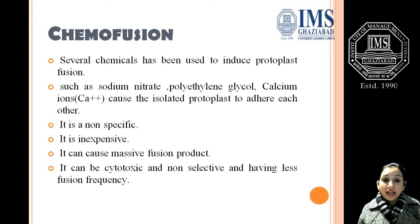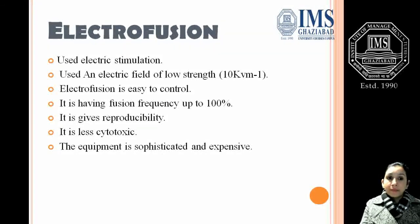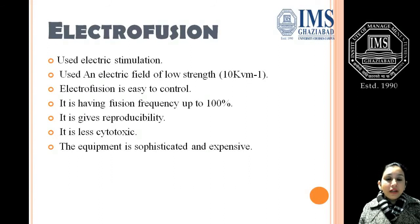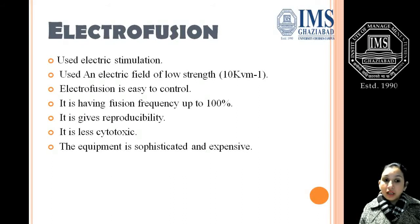In electro fusion, an electric field is used to fuse the protoplasts. A field of slow strength at 10 kilovolts is applied. Electro fusion is easy to control, can have a fusion frequency up to 100%, gives reproducibility, and is less cytotoxic. However, the equipment required is sophisticated and expensive.